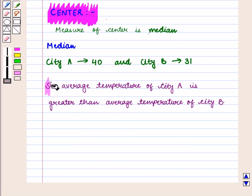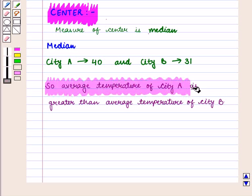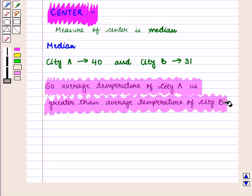So we can say that average temperature of city A is greater than average temperature of city B.